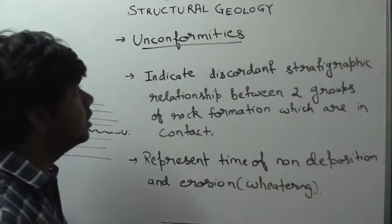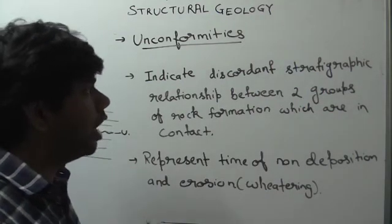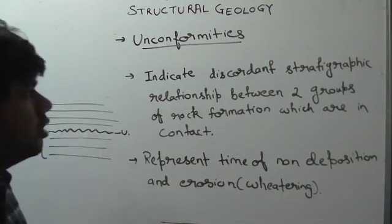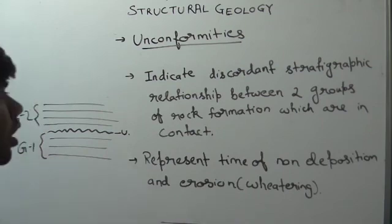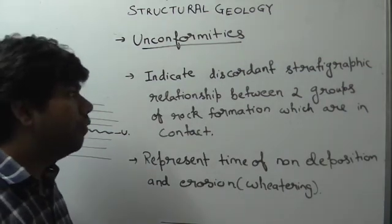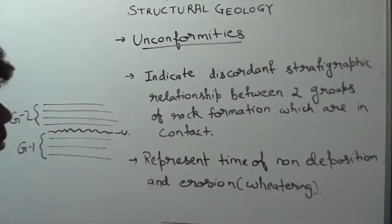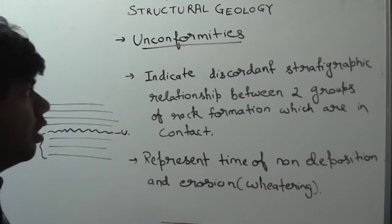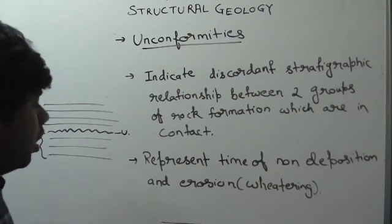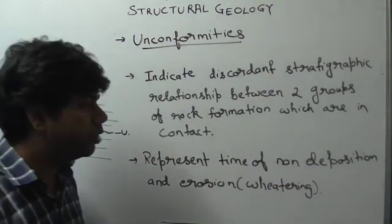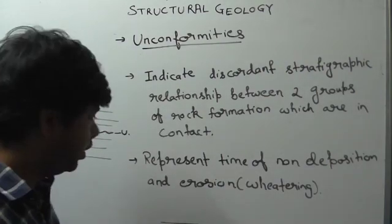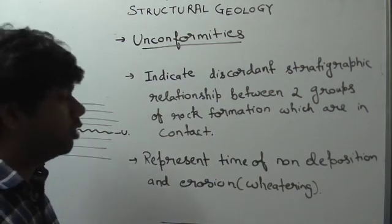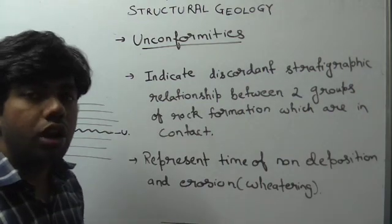So we can say that unconformity indicates a discordant stratigraphic relationship between two groups — group 1 and group 2 — of rock formations which are in contact, but separated by an unconformity or discordant stratigraphic boundary, which represents a time of non-deposition, weathering, or erosion of the older strata, over which a younger strata is deposited. So this is the definition of unconformity.